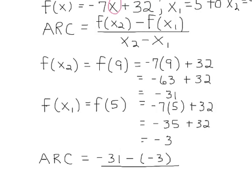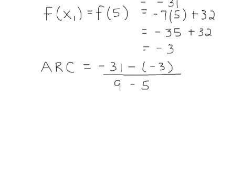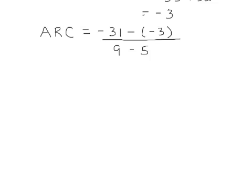That's over the change in x value. So x sub 2, which is 9, minus x sub 1, which is 5. We've put this together, now we need to simplify it down. We'll start in the numerator putting together -31 minus -3. A minus and a negative will turn to plus a positive. So now we have -31 plus 3, which gets us to -28 for the numerator. For the denominator, 9 take away 5 is 4.